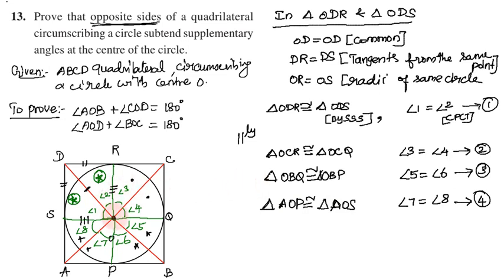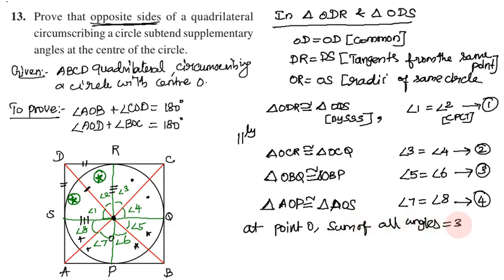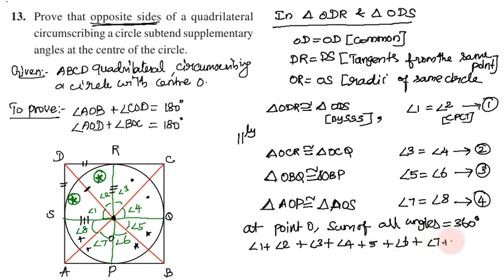Now, at point O, the sum of all angles is 360 degrees. So angle 1 plus angle 2 plus angle 3 plus angle 4 plus angle 5 plus angle 6 plus angle 7 plus angle 8 equals 360 degrees.